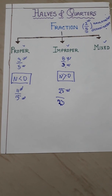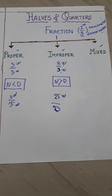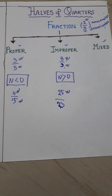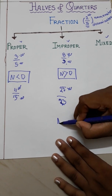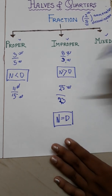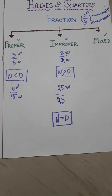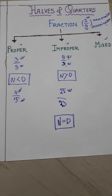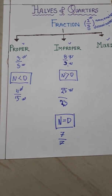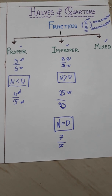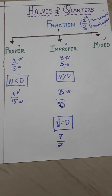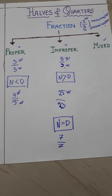There is another rule for improper fraction. When the numerator and denominator are the same, that fraction is also called an improper fraction. For example, 7 by 7 — here numerator and denominator are both the same, so this type of fraction is also called an improper fraction.